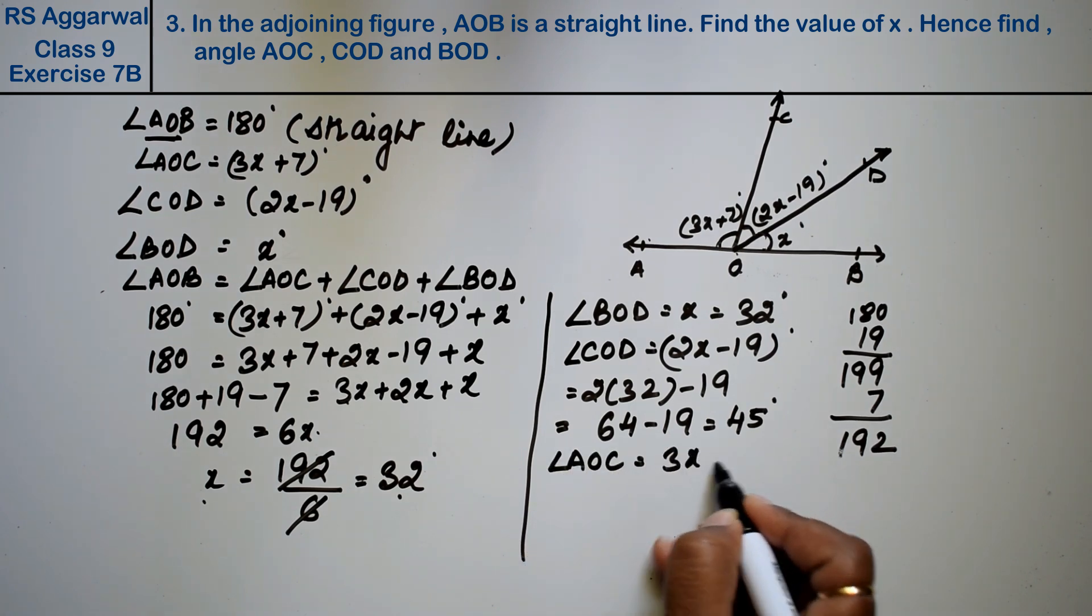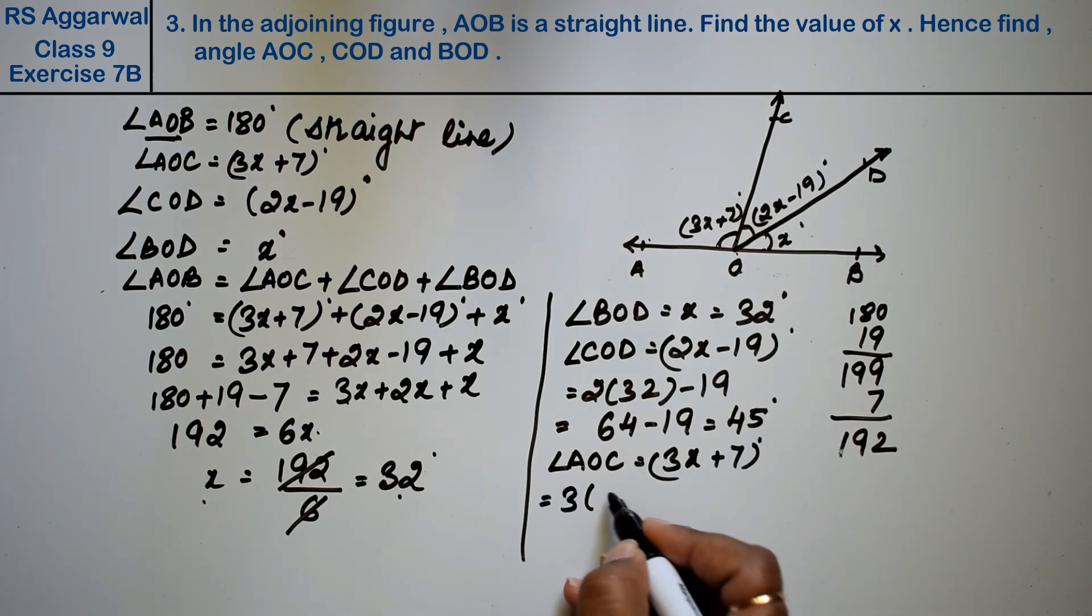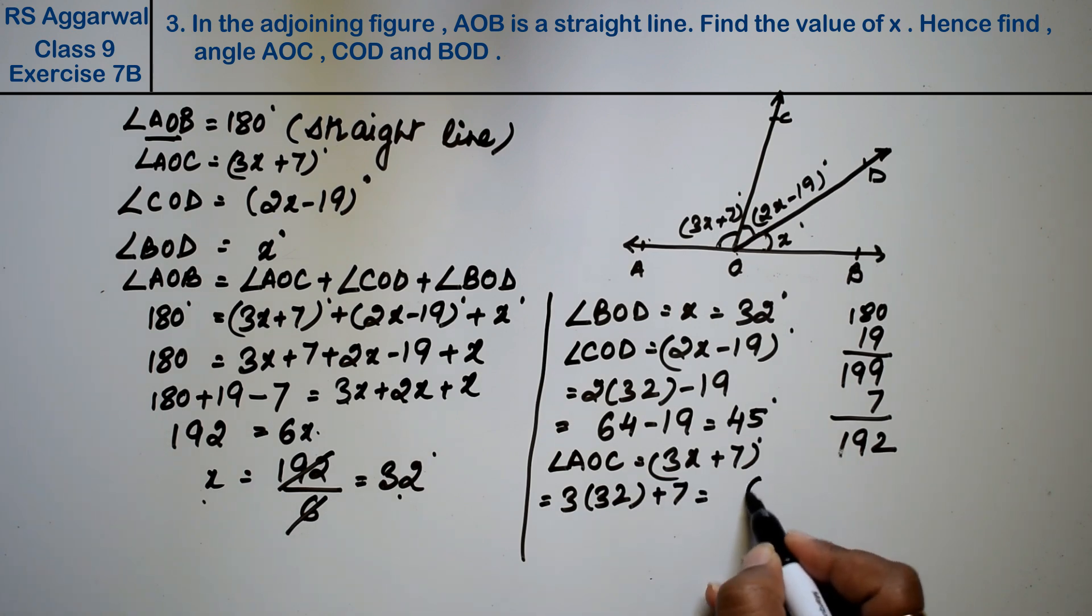Now AOC, that is 3x plus 7 degrees. So 3 into 32 plus 7. So it becomes 2 threes are 6, 3 threes are 9, plus 7. So it becomes 13, carry 1 and 10. 103 degrees.